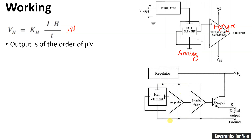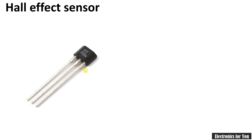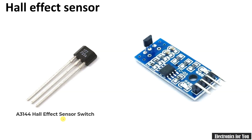Here is one example of a Hall Effect sensor — the 3144 Hall Effect sensor switch, which can be used with a Hall Effect sensor module. The circuit will be similar to what was previously shown.